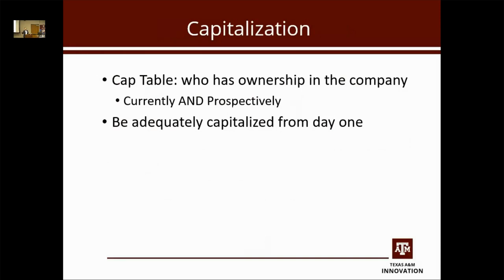What we recommend is when you're starting a new entity, particularly a corporation, start with a million shares of capitalization. Take whatever percentage you need, and when investors come forward, you can distribute those shares out of the currently undistributed pot. It's not a big deal, but it's a complication — a speed bump that people will run into.